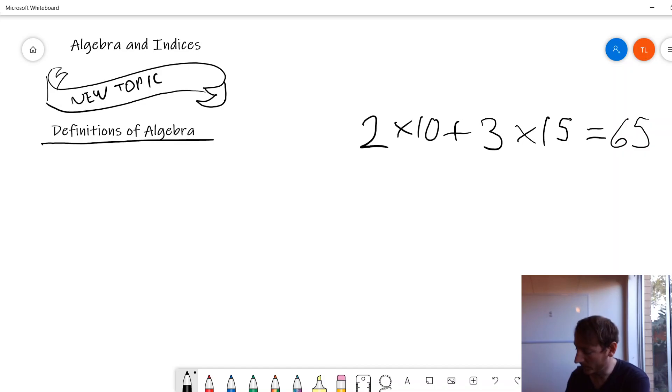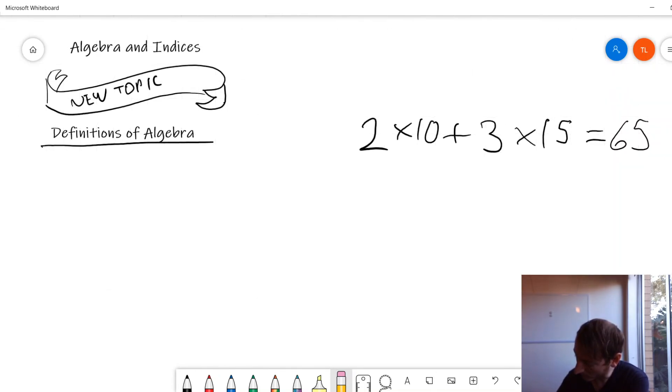Now, sometimes we don't actually know what the values are ahead of time. So, I don't know how much they cost. What I might normally do is put a question mark in there. Two times some amount that I don't know yet and then three times some amount that I don't know yet. But can you think of why this might be an issue? If I start doing maths with it, I might accidentally start treating these question marks as the same number. But we saw before they cost different amounts.